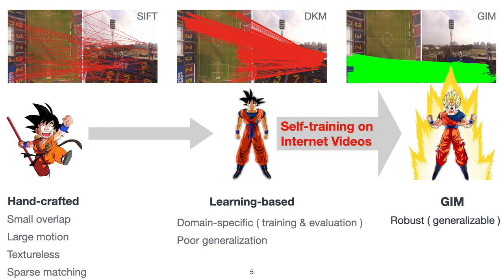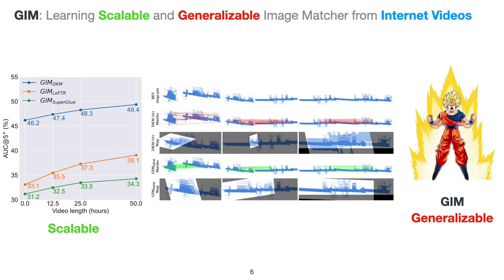The goal of GIM is to produce a single model that performs well on diverse zero-shot data. To achieve this, we propose a self-training framework that can learn scalable and generalizable image matchers from unlabeled internet videos. In terms of scalability, GIM can be applied to various types of image-matching architectures, such as DKM, LoFTR, and SuperGlue.